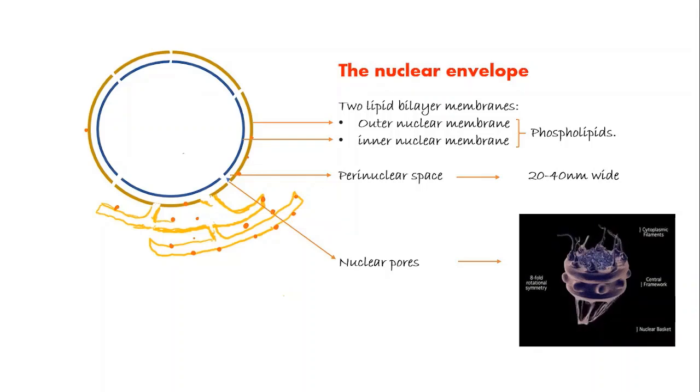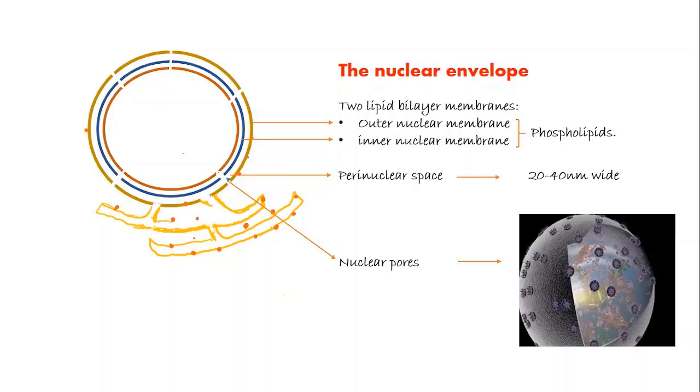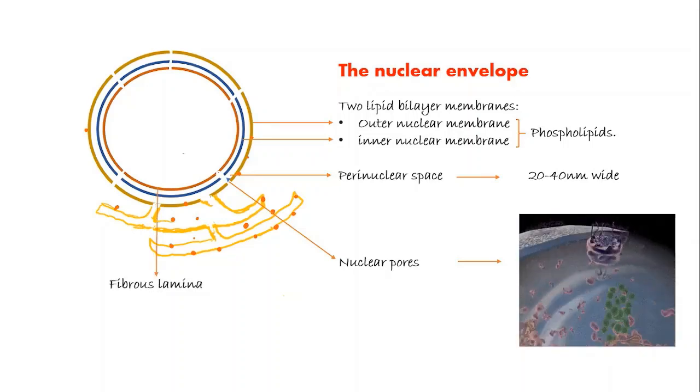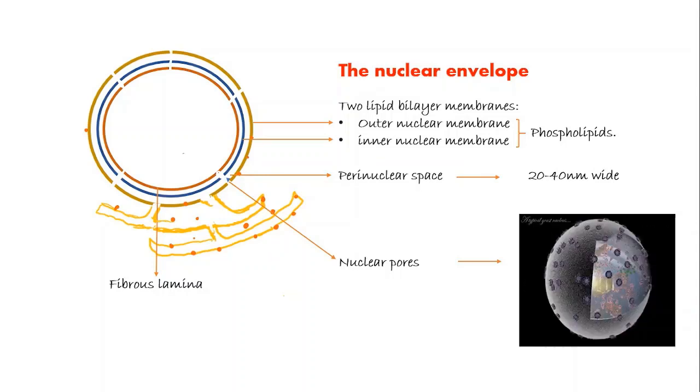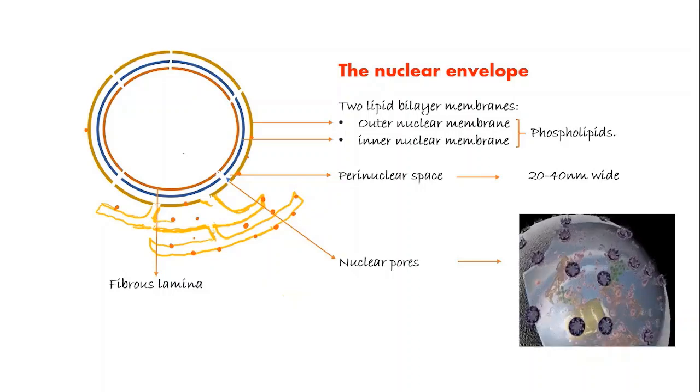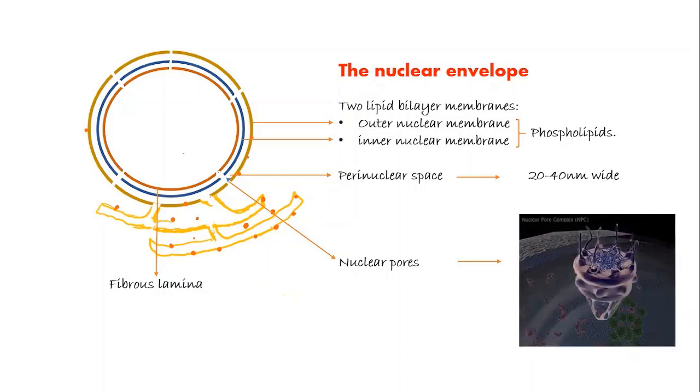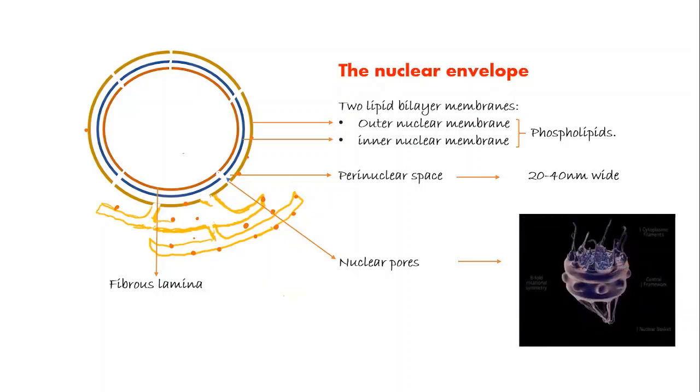Another important part of nuclear envelope is called fibrous lamina. This is a part of nuclear cytoskeleton that is attached to the inner layer of the nuclear membrane. It consists of fine protein filaments and serves to provide mechanical reinforcement to the bilayer membrane.